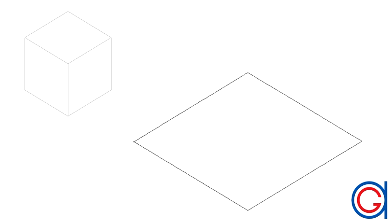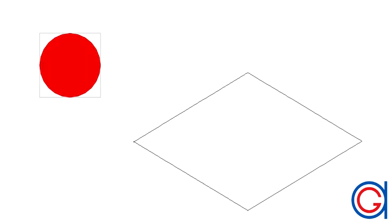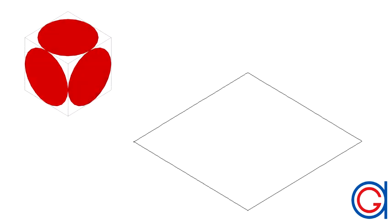An isometric ellipse is like looking at circles in isometric projection. In the top left of the screen we can see a cube which is drawn in isometric projection with three equal angles of 120 degrees.